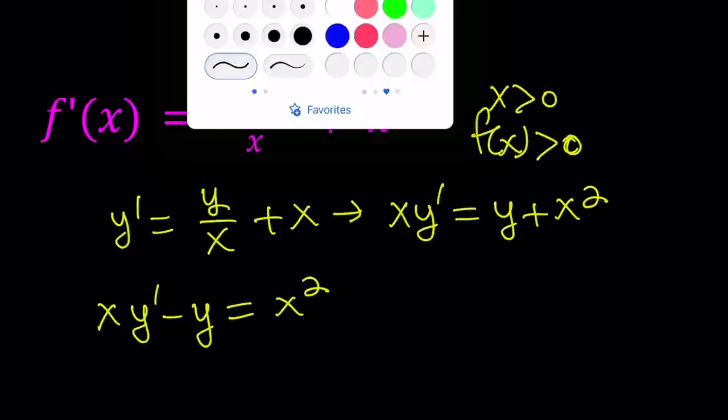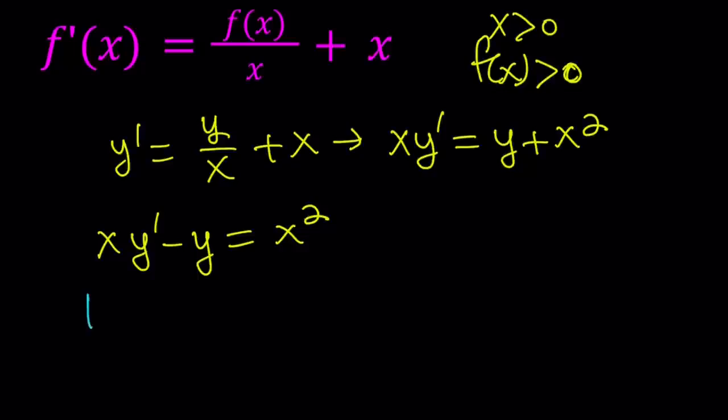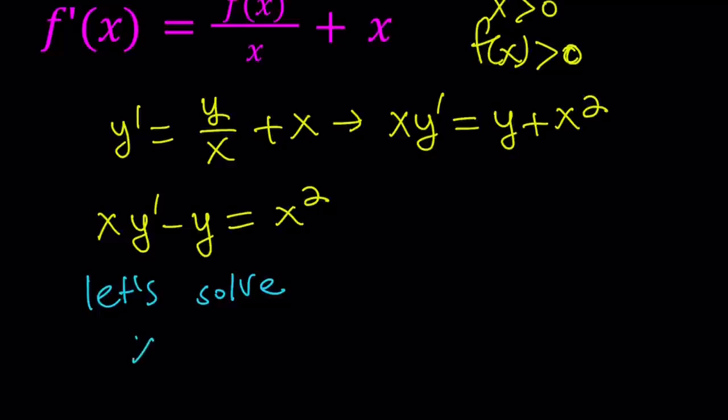But that doesn't matter because we can still consider the homogeneous version of this equation. So suppose we don't have the x squared there. Let's go ahead and solve the homogeneous version or you can call that y sub h. So let's go ahead and solve xy prime minus y equals zero. So we're going to consider the homogeneous solutions first. And then we're going to include the specific solution or particular solution for the non-homogeneous case. And we're going to put those together.